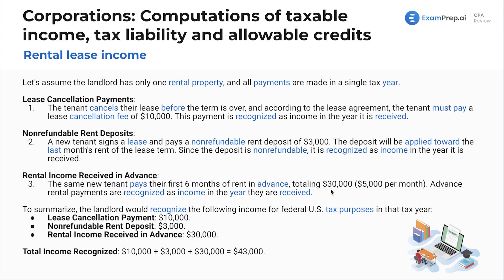For rental income received in advance: the same new tenant pays their first six months of rent in advance, totaling thirty thousand dollars at five thousand dollars per month. Advanced rental payments are recognized as income in the year they are received. In summary, the landlord would recognize all three amounts totaling forty-three thousand dollars for U.S. tax purposes.